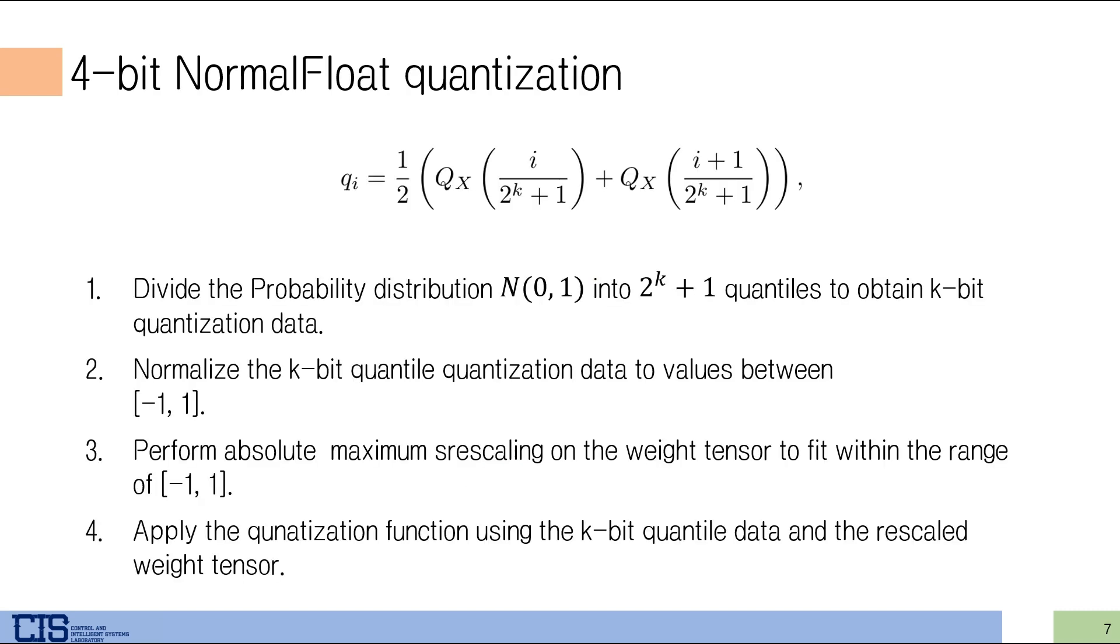QLoRA's 4-bit quantization is performed using quantile quantization, which estimates the quantile of the empirical distribution function. This new data type is called 4-bit normal float. It addresses the shortcoming of traditional uniform quantile quantization, which is highly random, by normalizing the fixed probability distribution of model parameter W to -1 to 1. So we estimate the 2 to the K values QI of the data type as shown in the equation. Here, QX is the quantile function of the standard normal distribution. The detailed method is as follows.